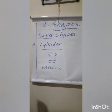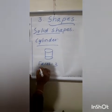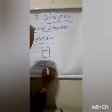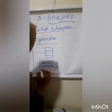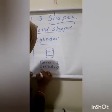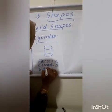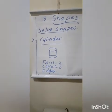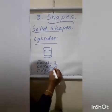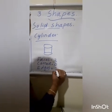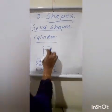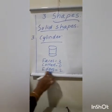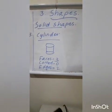And corners — zero. A cylinder has edges. How many? Two edges. A cylinder has 3 faces, 0 corners, and 2 edges.